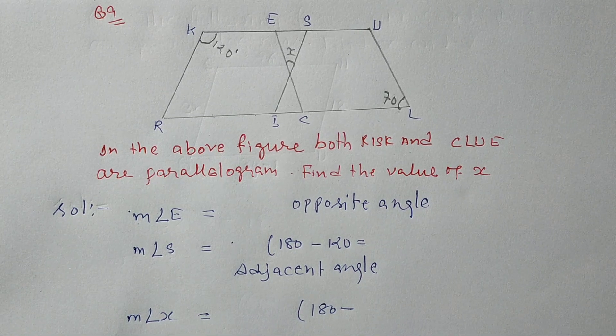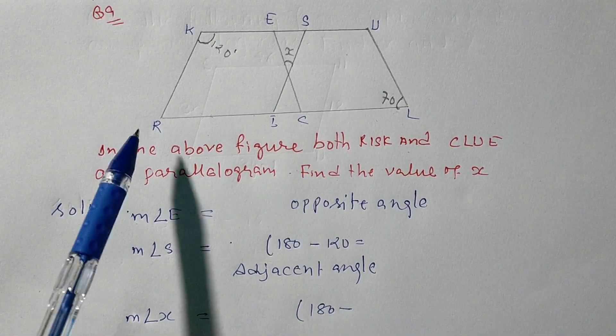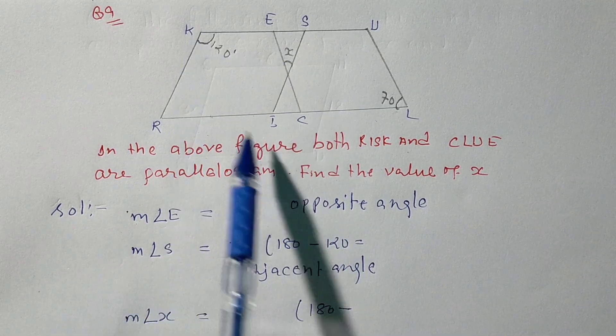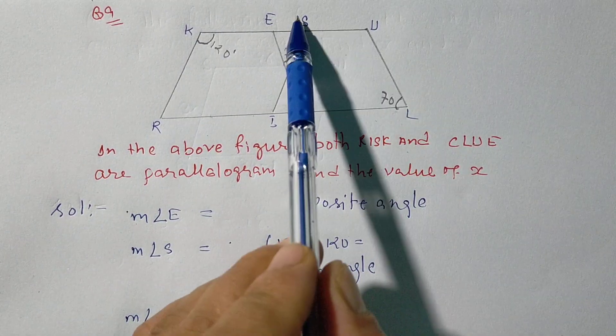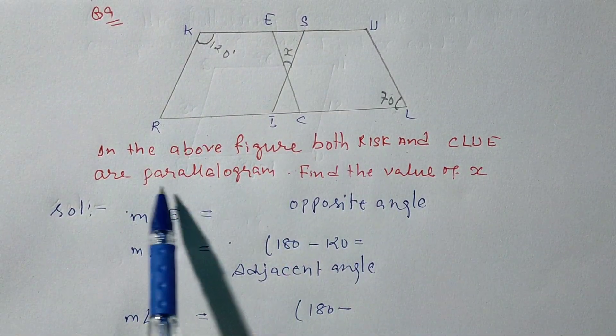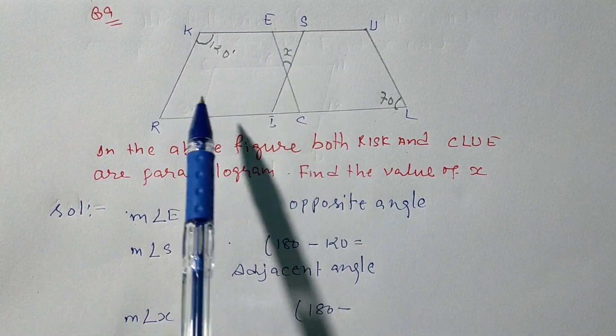Okay guys, next question, question number 9. In the above figure, both RISK and CLUE are parallelograms. RISK means R, I, S, K, and CLUE is C, L, U, E.